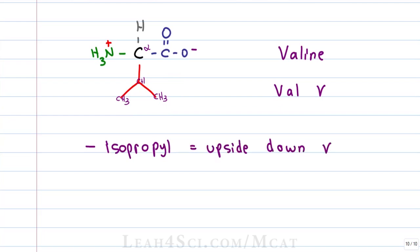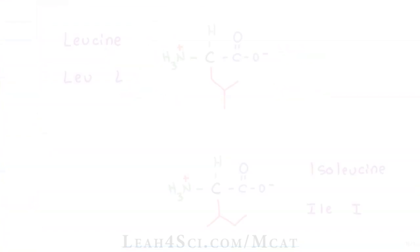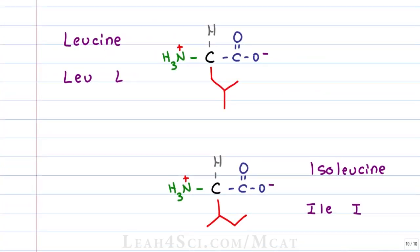Even though it's a small side chain, the fact that it has a branch on the carbon directly attached to the parent makes it bulky and valine doesn't like to be inside alpha helices because the alpha helix is a tight turn and that branch just doesn't play nice.